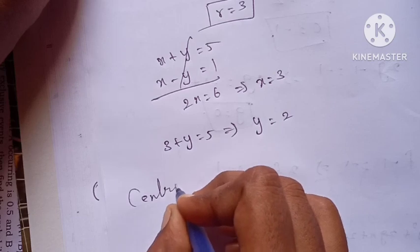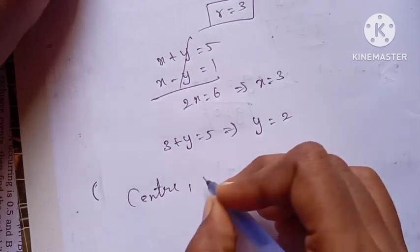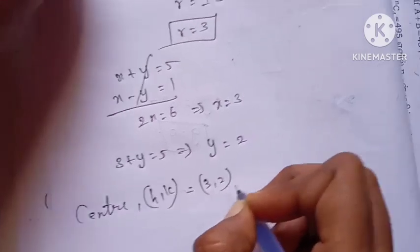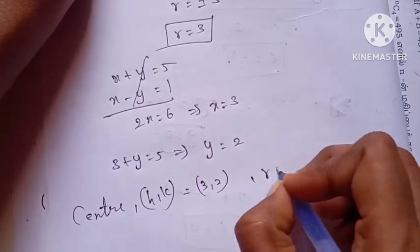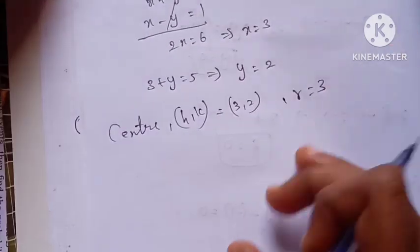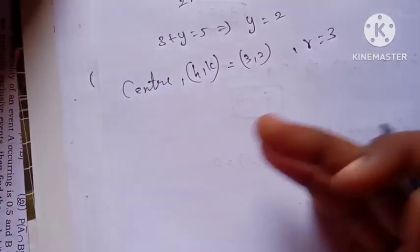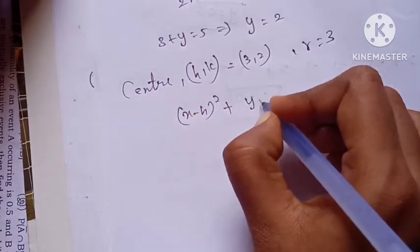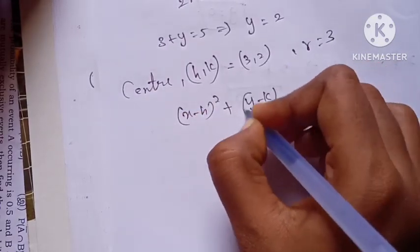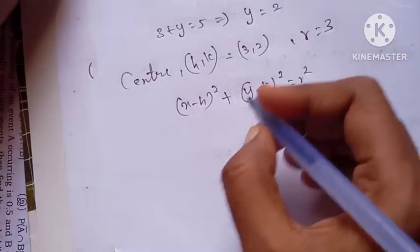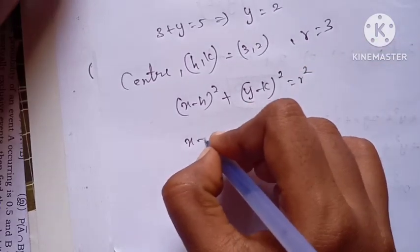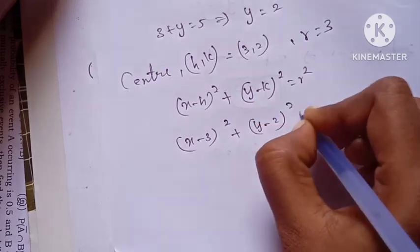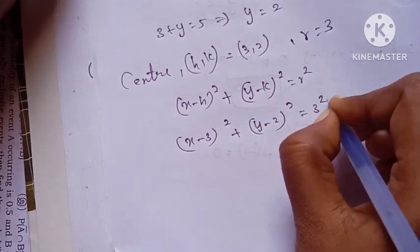So the center (h, k) equals (3, 2) and the radius equals 3. Using the general equation of a circle: (x minus h)² plus (y minus k)² equals r², we get (x minus 3)² plus (y minus 2)² equals 9.